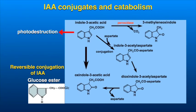Catabolism of IAA is known to occur through peroxidase-catalyzed reactions that lead to oxidation of the indole ring to form oxindoles. Besides this, photodestruction of IAA is also known to occur and is mediated by the plant pigments riboflavins. Inactive IAA is also formed by conjugation with glucose or amino acids, which are the forms in which IAA is transported. Free IAA is released at the site of action. Conjugation with aspartic acid, however, is irreversible and leads to IAA catabolism.